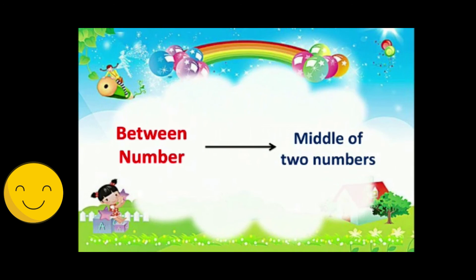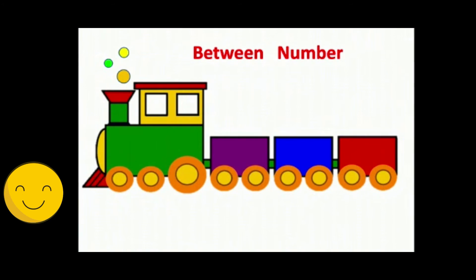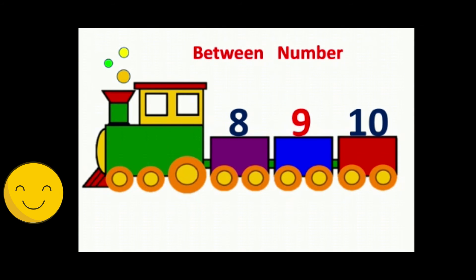Next, let's do between numbers. Between number means the middle of two numbers. Look at the numbers on the train: 8, 10. Which number will come in between 8 and 10? 9. 8, 9, 10. Very good. So between number is 9.